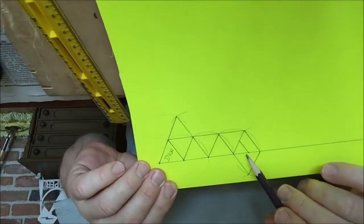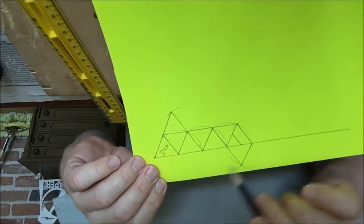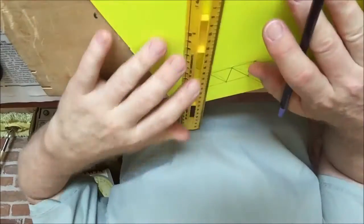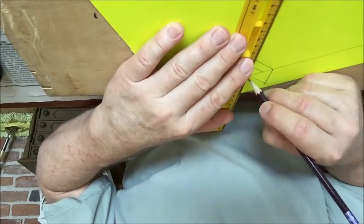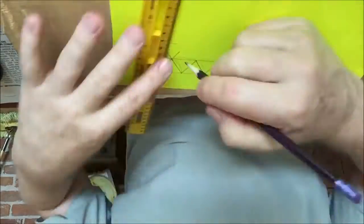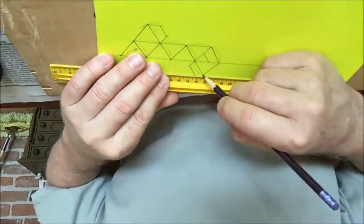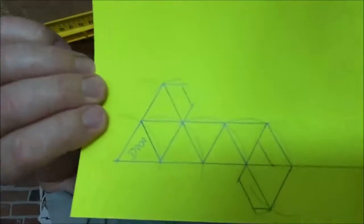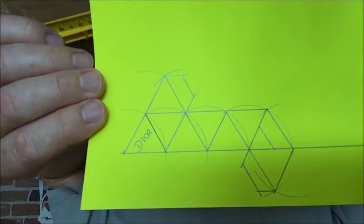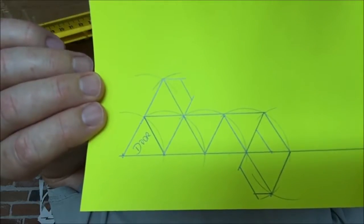That we will cut later for the door to slide into. Add flaps. Here is the full net of the octahedron with the door, the flaps, and the slot.